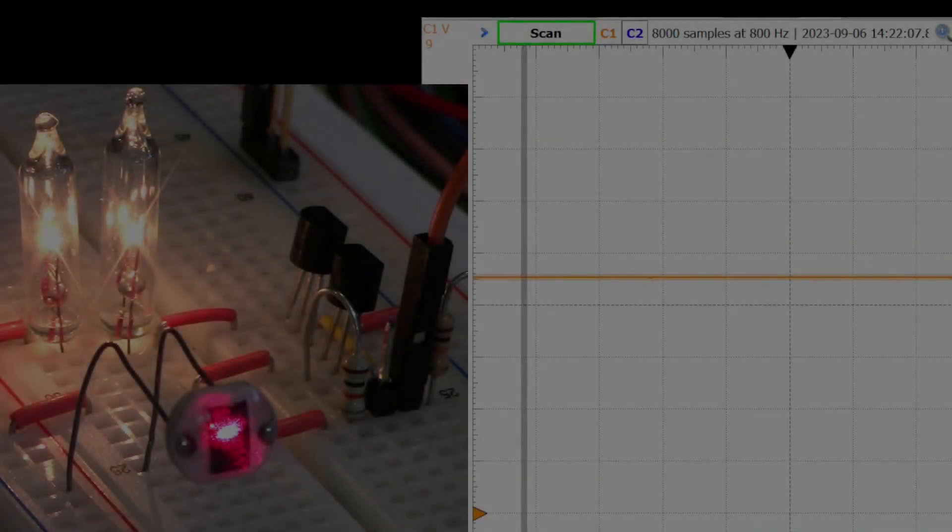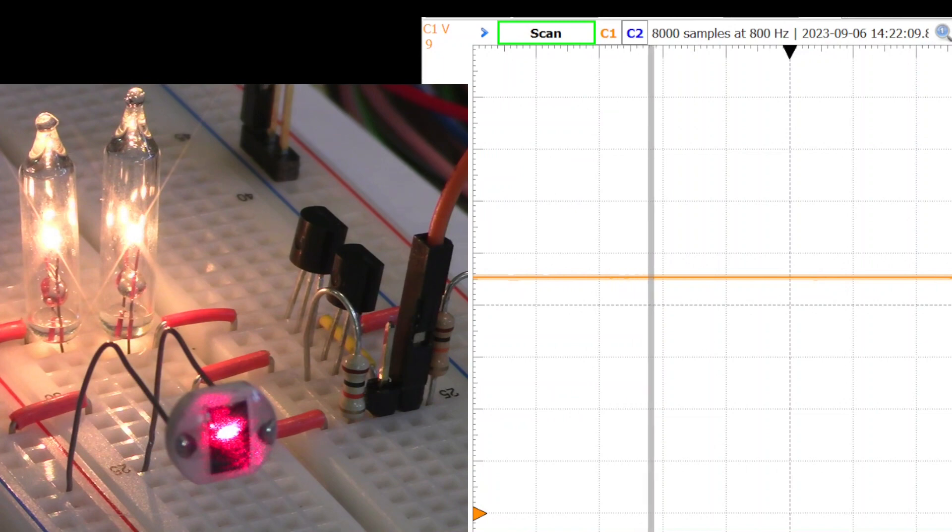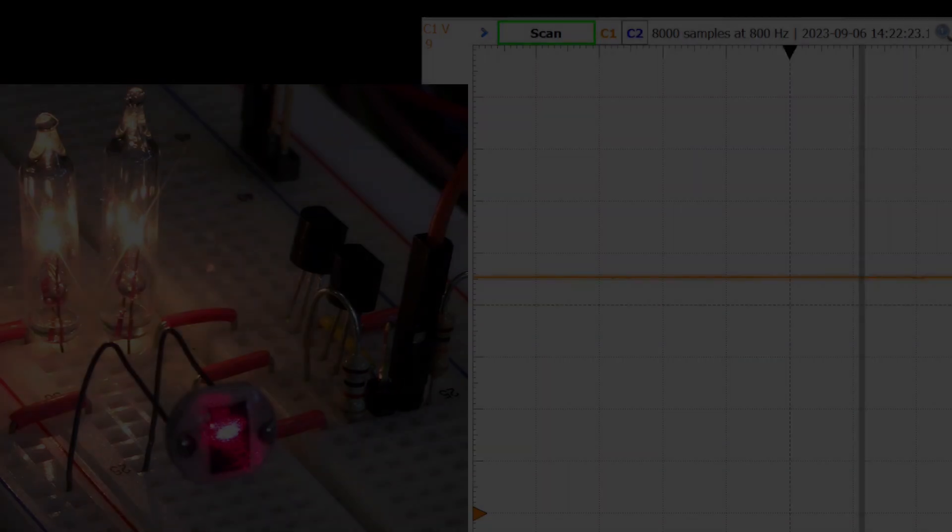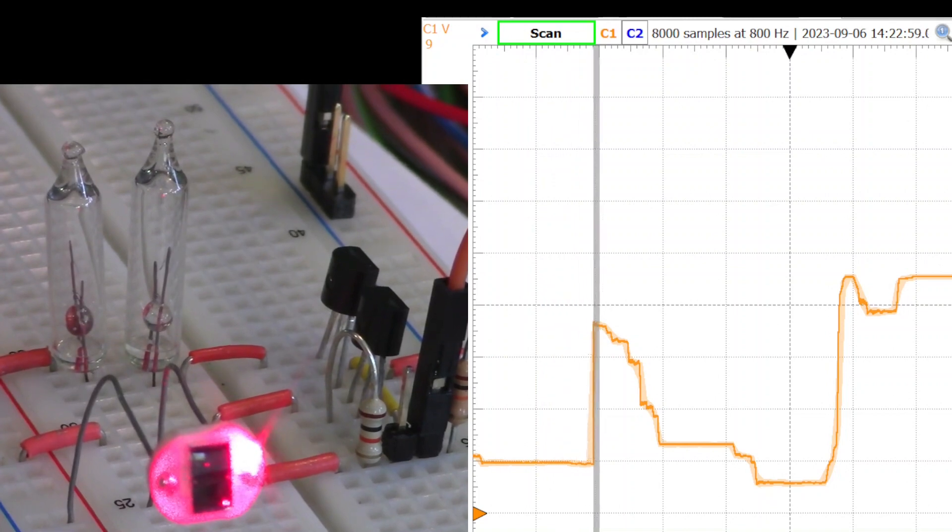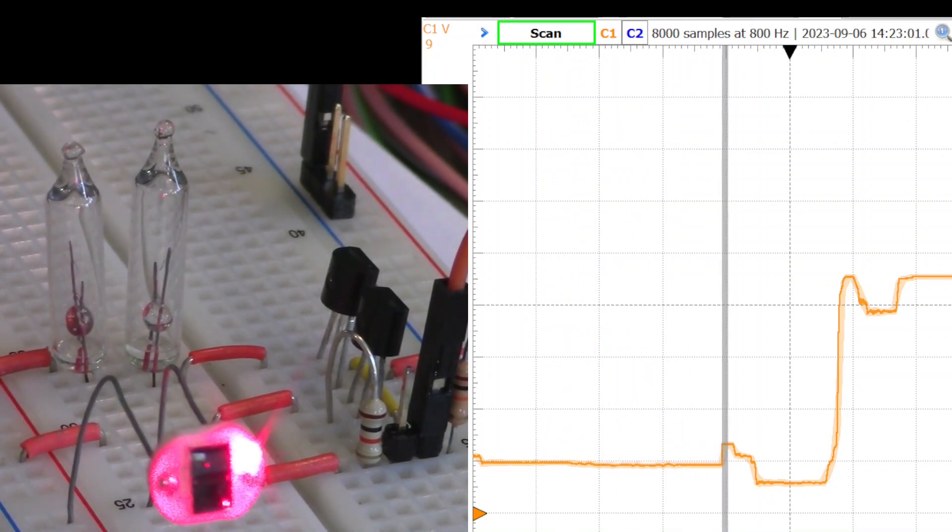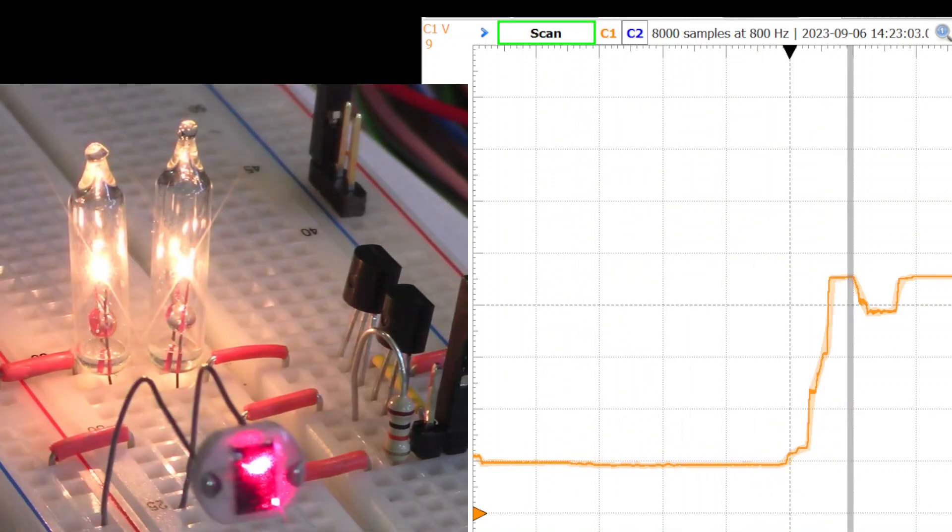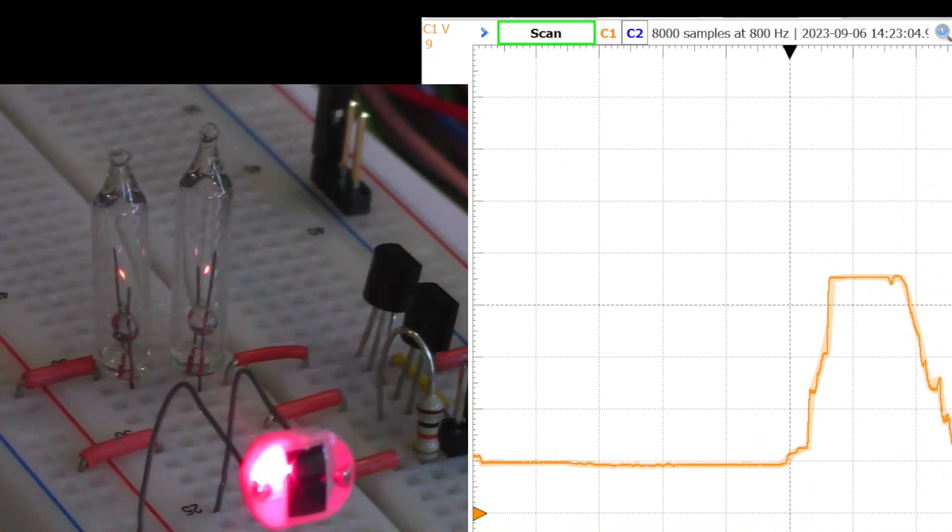And now we get to the fun part where we get to test the circuit. There is a red laser approximately 10 feet away from this sensor. Currently, it is shining on the sensor. As I move the board, you can see that the laser is no longer directly on the sensitive portion of the diode. The lights go out. Move it back, lights are on, and lights out again.